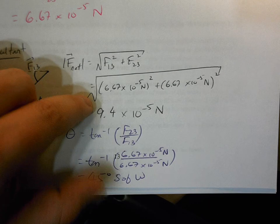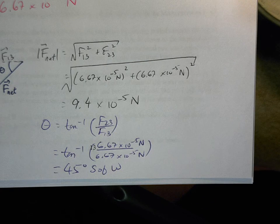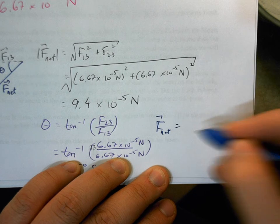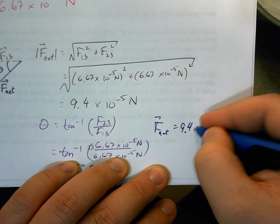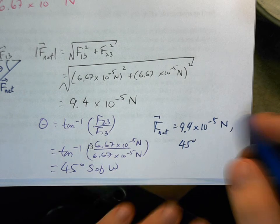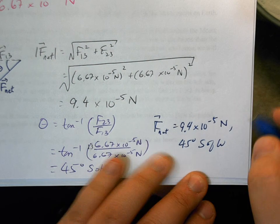So I have my magnitude, I have my direction. So the last thing is just to tie it up. So I can say that the net force acting on sphere 3, it's 9.4 times 10 to the minus 5 newtons, and it's acting 45 degrees south of west.